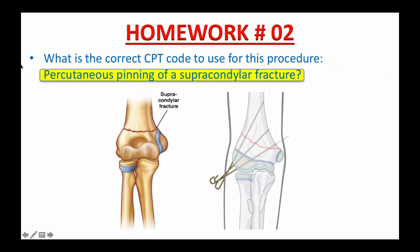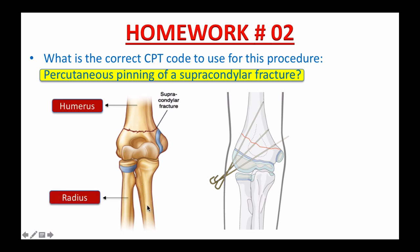Homework number 2. What is the correct CPT code to use for this procedure: percutaneous pinning of a supracondylar fracture? Before you start, I just want to go over the anatomy of the supracondylar. This is your elbow — up here is your upper arm, or the humerus bone, and down here is your lower arm: the radius and ulna.